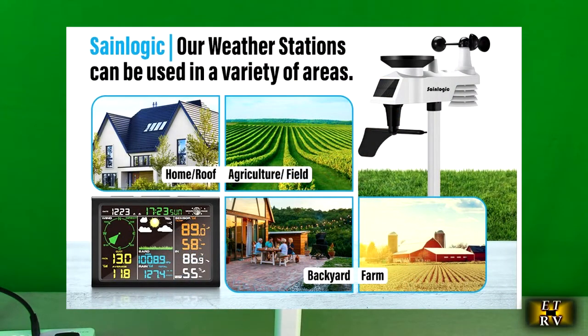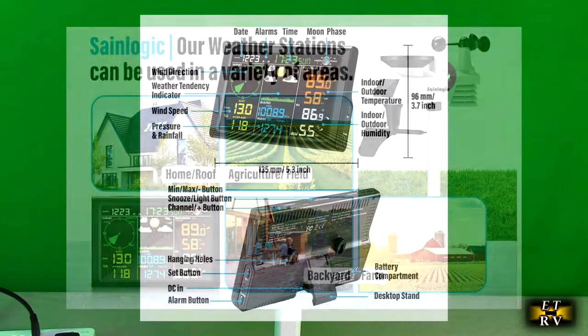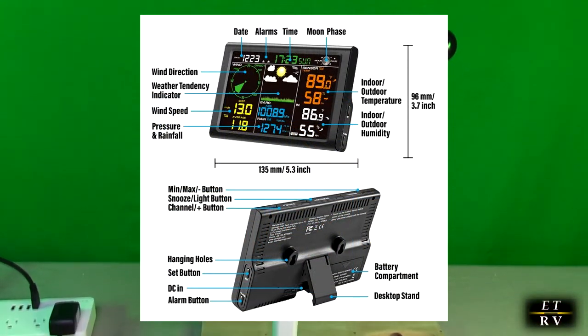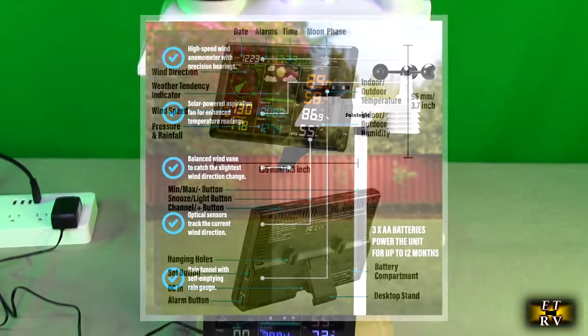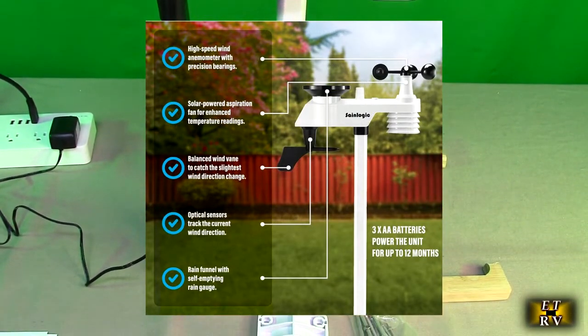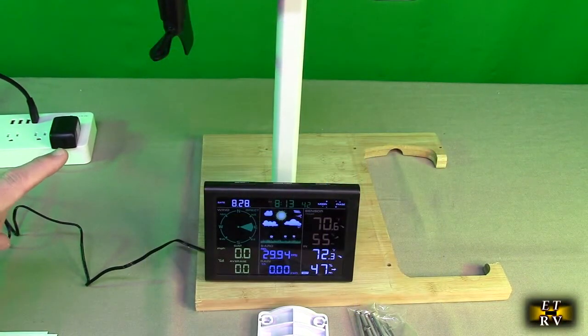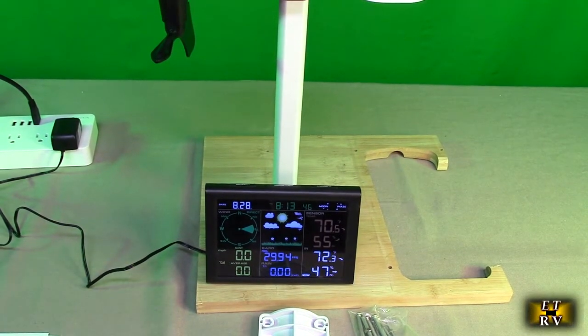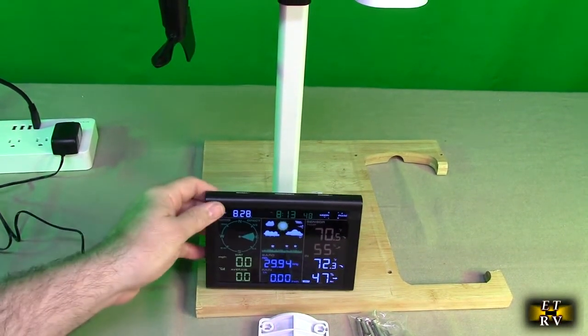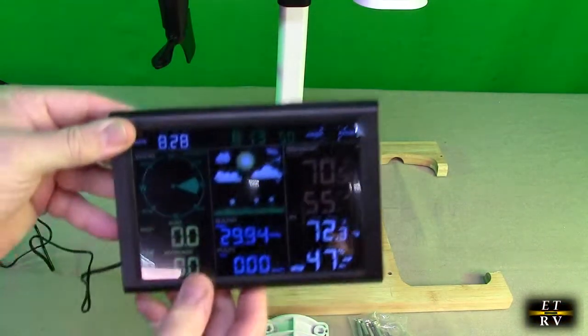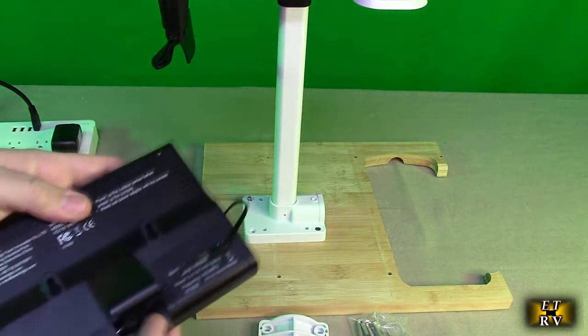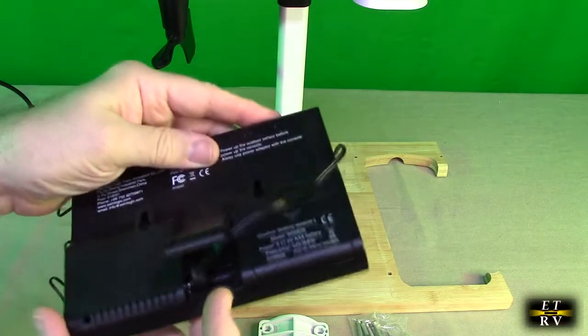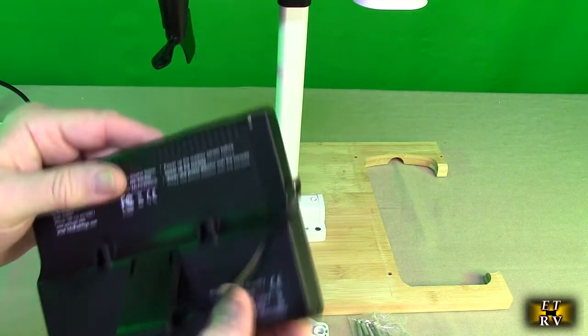This is the WS-0835. I have it temporarily just mounted on a piece of bamboo so we can look at the features. You can see to the left right there, that's the included AC to DC adapter that goes right in the back of the unit and allows you to have this display full on.